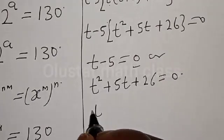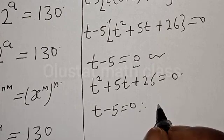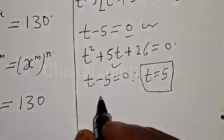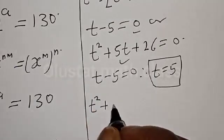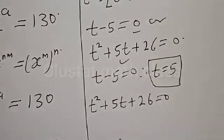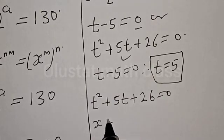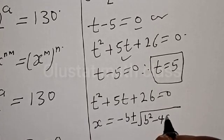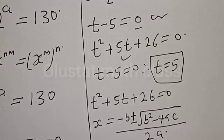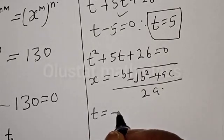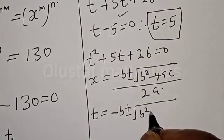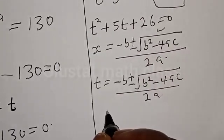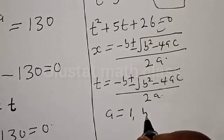From t minus 5 equal to zero, we get t equal to 5. That is one value of t. Now for the quadratic equation t squared plus 5t plus 26 equal to zero, let's solve using the quadratic formula: t equals minus b plus or minus square root of b squared minus 4ac, over 2a.